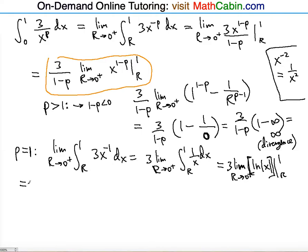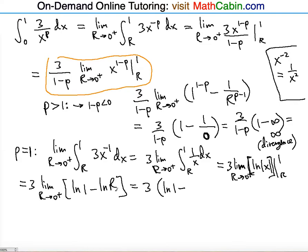Let's evaluate this. We have 3 times the limit as r approaches 0 from the right of ln|1| minus ln|r|, by the fundamental theorem of calculus. Taking the limit: ln of 1 is 0, and ln of 0 is negative infinity. So we have 0 minus negative infinity, which is positive infinity, times 3 is still infinity. So there is still divergence when p is equal to 1 as well.